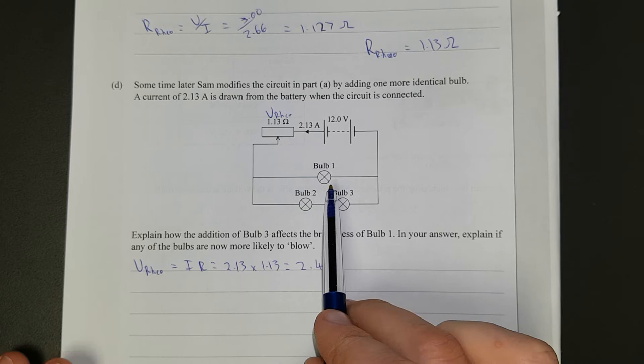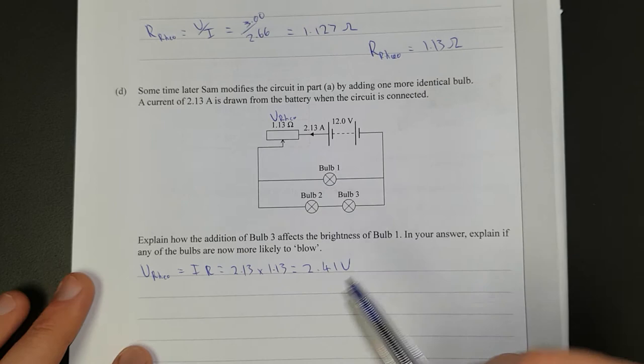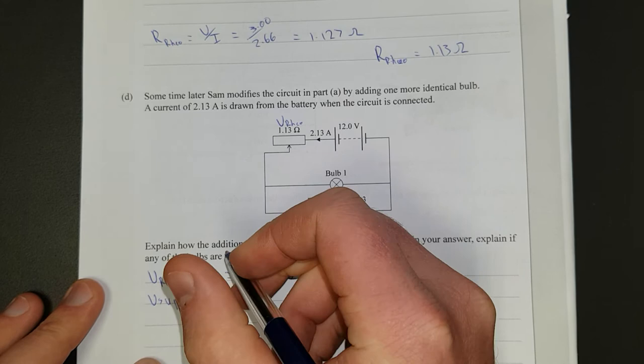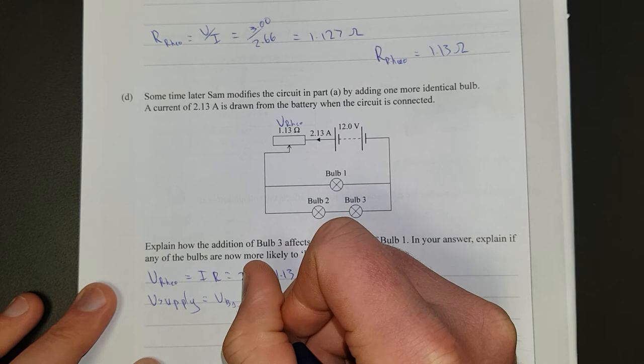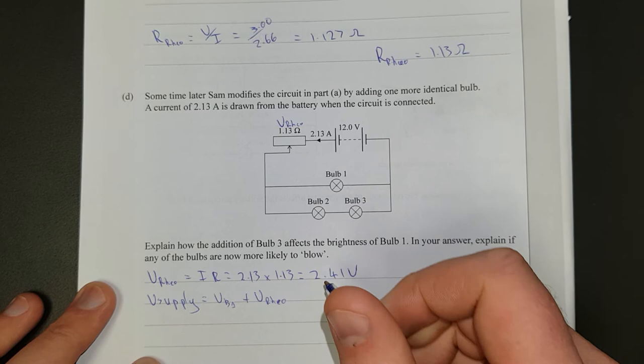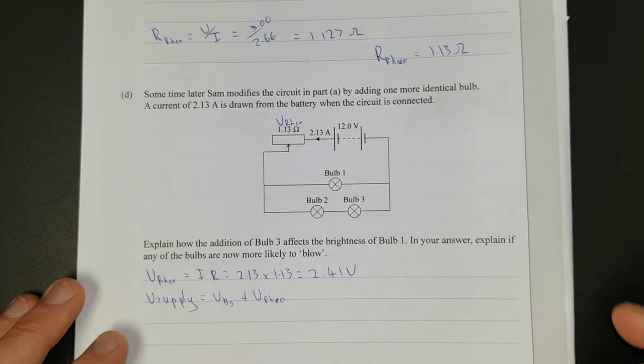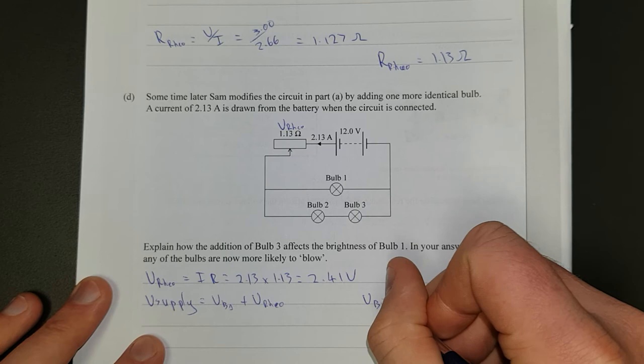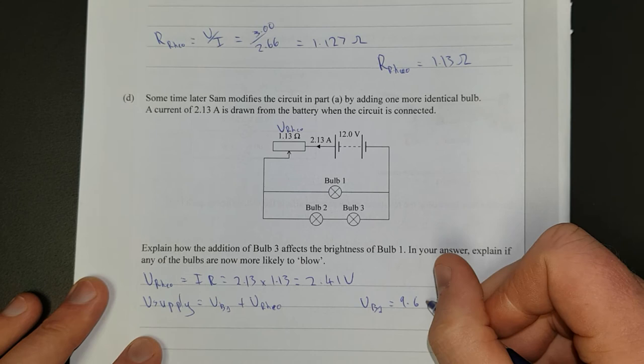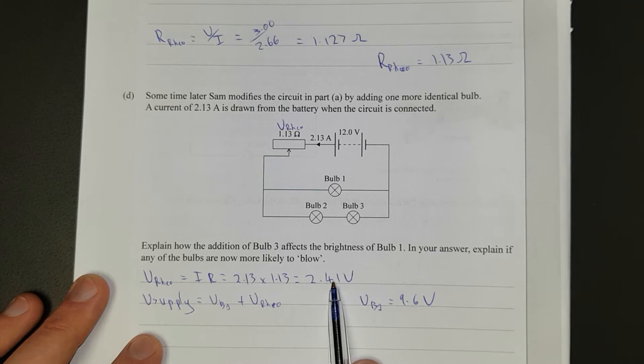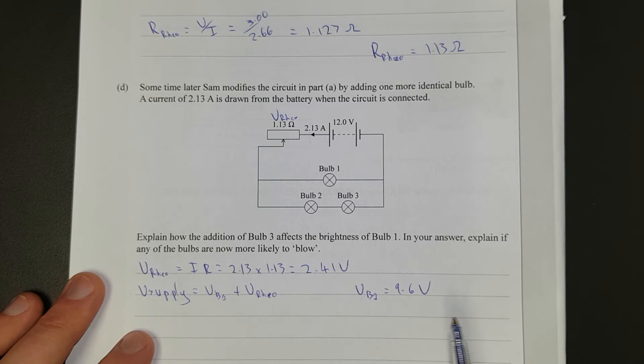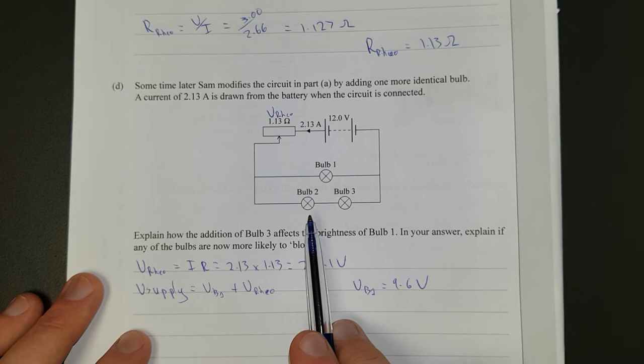So that means the voltage across bulb 1 will have increased, and we can figure that out just by saying V-supply is equal to V-bulb 1 plus V-Rio. V-bulb 1, V1 is equal to 9.6 volts, because we originally were at 3 volts, and now we're down to 2.4, so that's a drop of 0.59, rounding that up to 0.6 volts. So I'm going to add that 0.6 to the original 9 volts that was across that bulb.